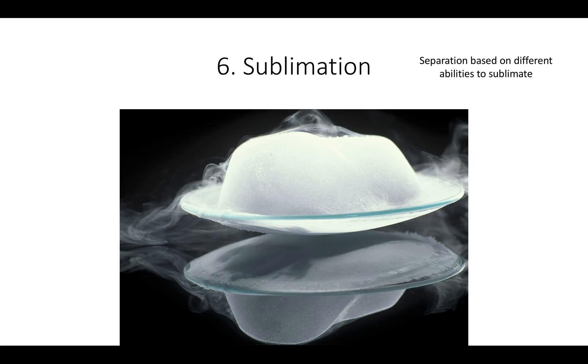And finally, you can separate things with sublimation. So sublimation is when materials go from a solid directly to a gas. And certain materials do that at particular temperatures. So if you have two things, one sublimates at one temperature and another sublimates at a different temperature, you can separate them by heating them up in between those temperatures.